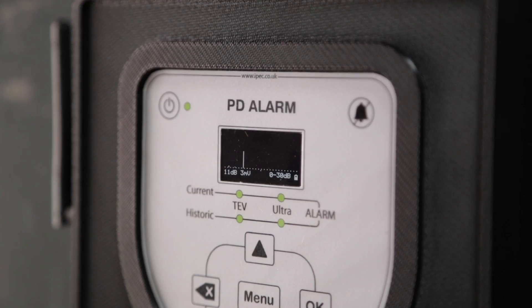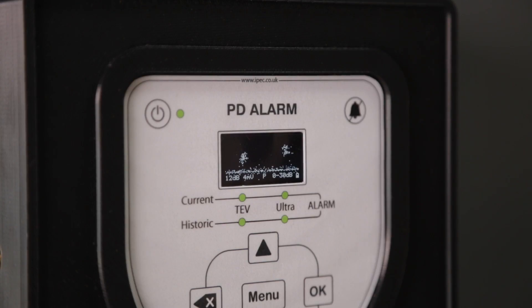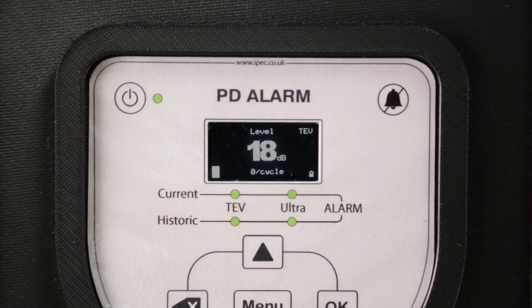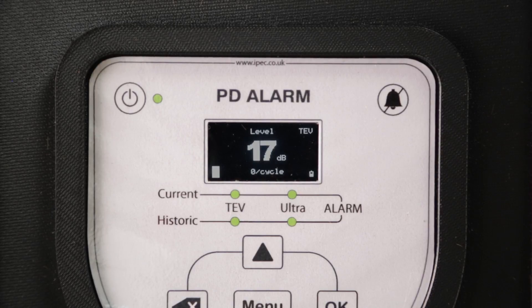The instrument's sophisticated algorithms accurately distinguish between PD and electrical noise interference. The monitor can measure PD magnitude even when the noise level is greater than the PD. All measured data is recorded and saved to allow for trend analysis.